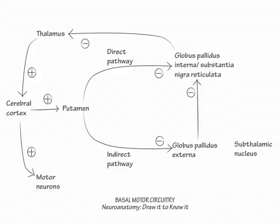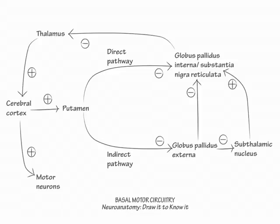Disruption of the indirect pathway here causes overexcitation. Show the globus pallidus externa inhibit the subthalamic nucleus, and show the subthalamic nucleus excite the globus pallidus interna and substantia nigra reticulata combination. This separate loop does not alter the arithmetic of the indirect pathway — there are still three inhibitory steps, making it ultimately an inhibitory pathway.